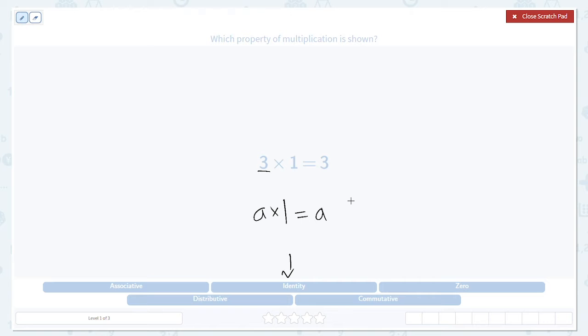3 times 1 is just 3 again. This is the identity property.